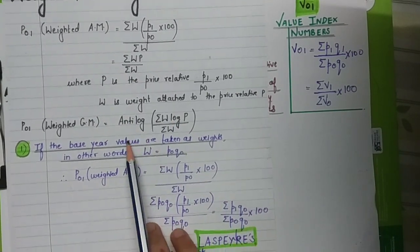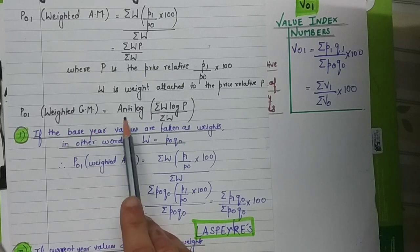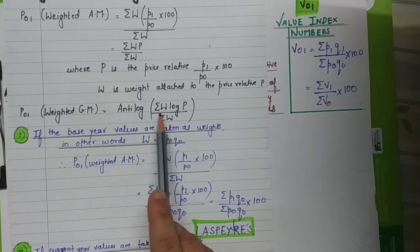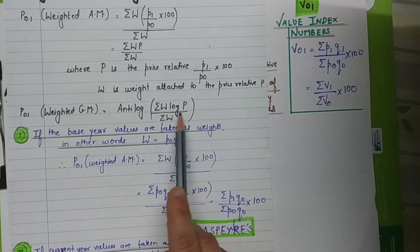The formula for the weighted geometric mean is antilog of sigma(W × log P) divided by sigma(W).